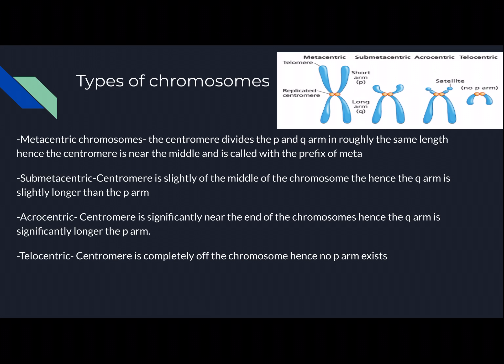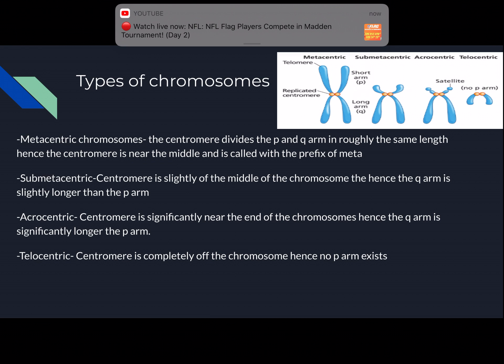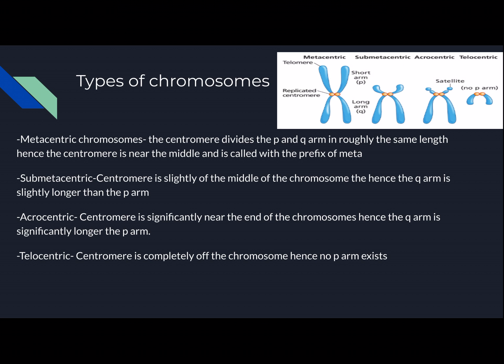Submetacentric is when the centromere is slightly off the middle of the chromosome. Hence, the Q arm, which is the long arm, is slightly longer than the P arm. Acrocentric is when the centromere is significantly near the end of the chromosome. Hence, the Q arm is significantly longer than the P arm. Essentially, acrocentric is almost to the end, but it's not at the end, so the Q arm is significantly longer than the P arm.